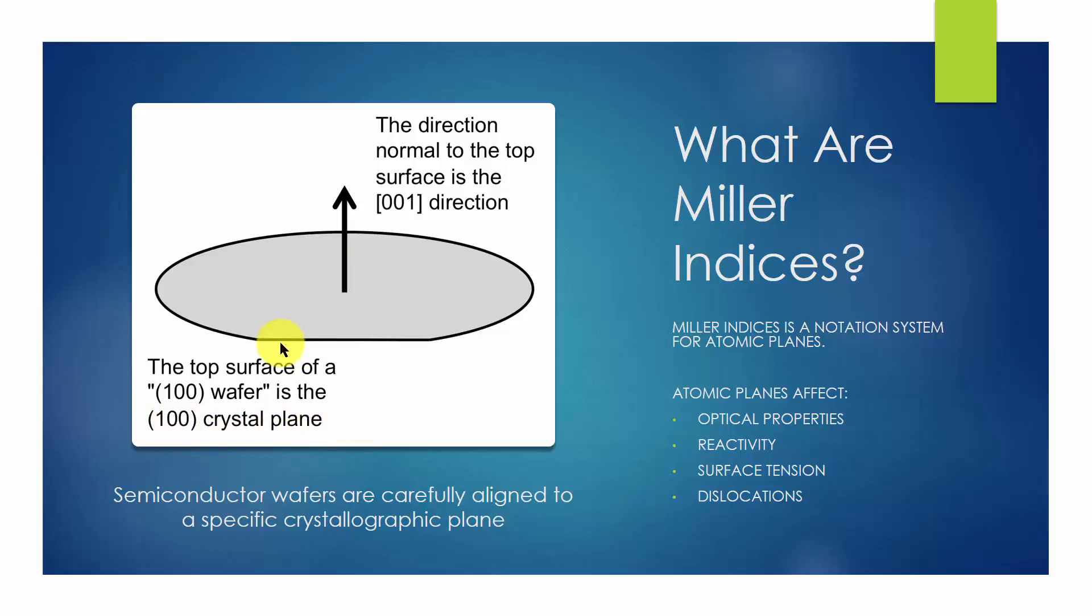A flat cut is ground along the edge to identify a reference direction within the surface plane. The top surface is represented by its Miller indices (100), and the upward direction perpendicular to this plane is represented by its Miller indices (001).